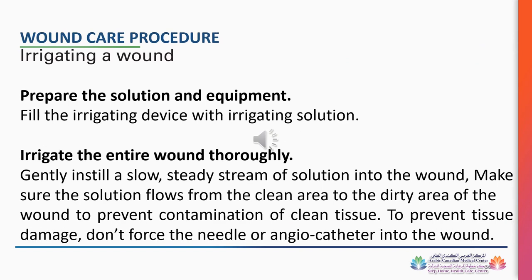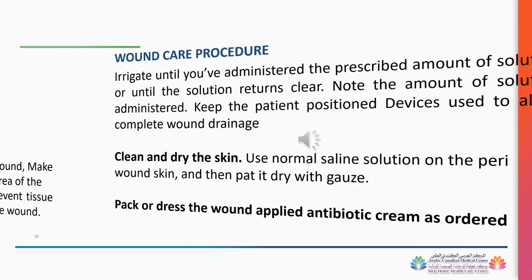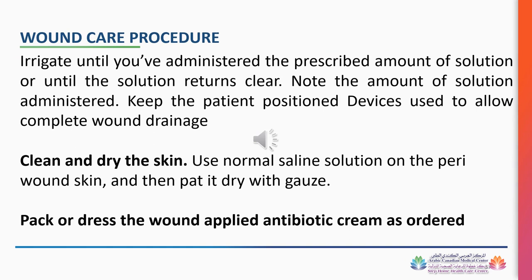Irrigating a wound: prepare the solution and equipment, fill the irrigating device with irrigating solution, and irrigate the entire wound thoroughly. Gently instill a slow, steady stream of solution into the wound, ensuring the solution flows from the clean area to the dirty area to prevent contamination. Do not force the needle or angiocatheter into the wound to prevent tissue damage. Irrigate until the prescribed amount of solution has been administered or until the solution returns clear. Clean and dry the skin using normal saline solution on the periwound skin, pat dry with gauze, pack or dress the wound, and apply antibiotic cream as ordered.